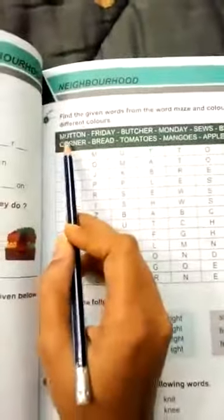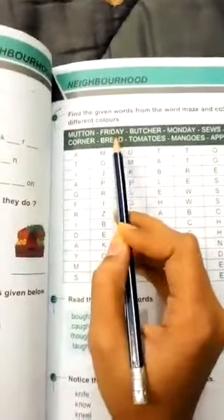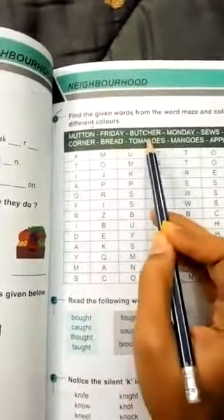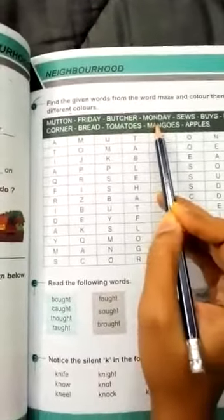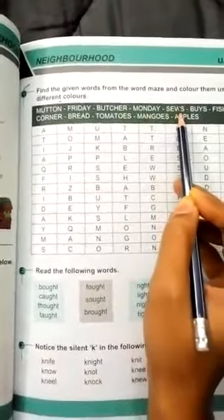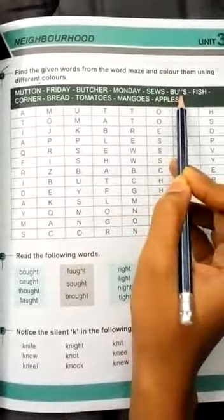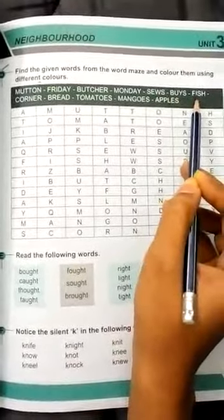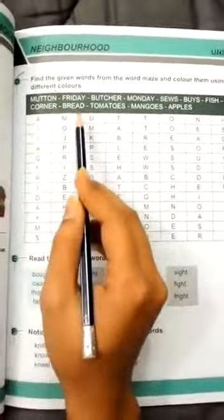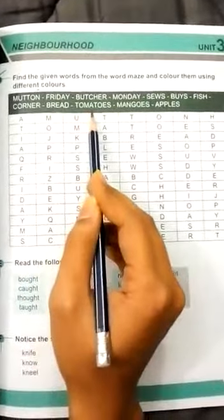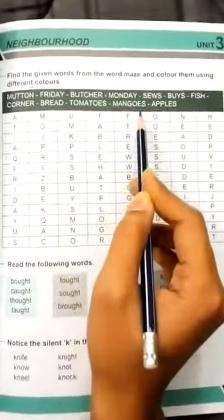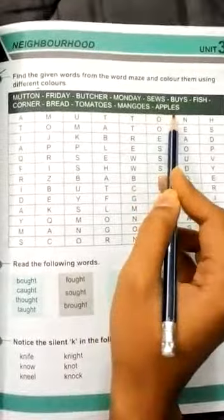Mutton, Friday, butcher, Monday, sews, buys, fish, corner, bread, tomatoes, mangoes, and apples.